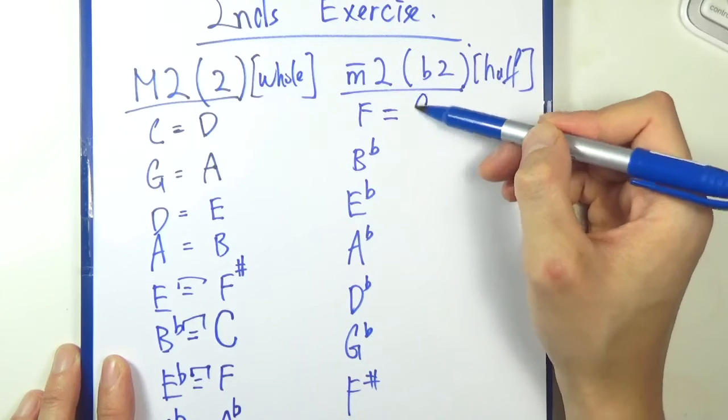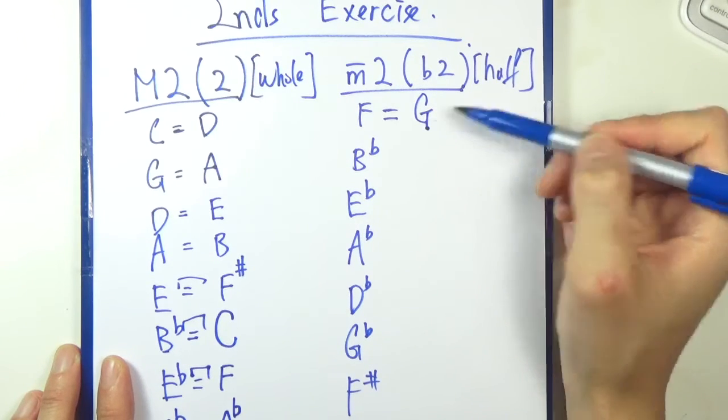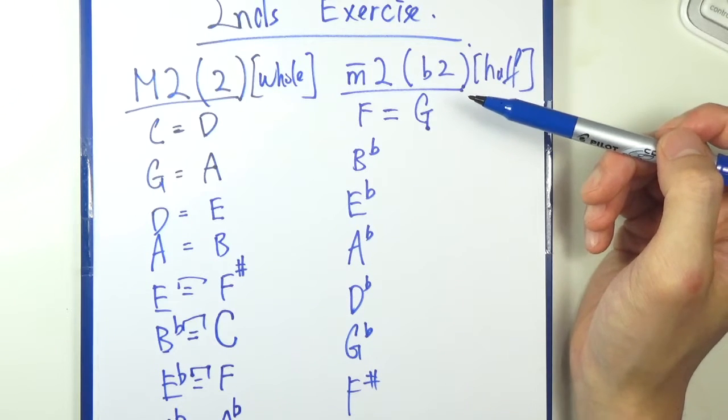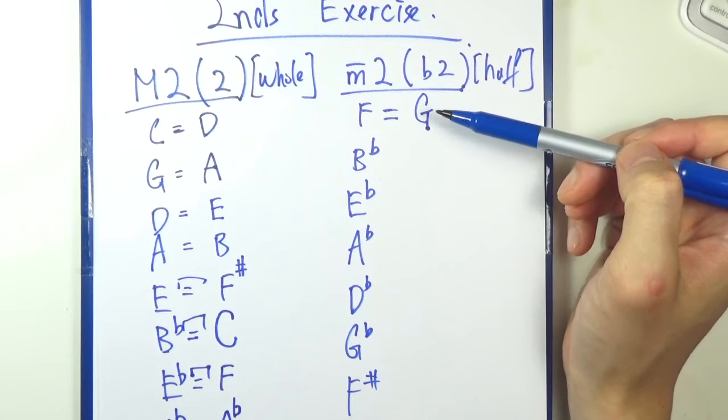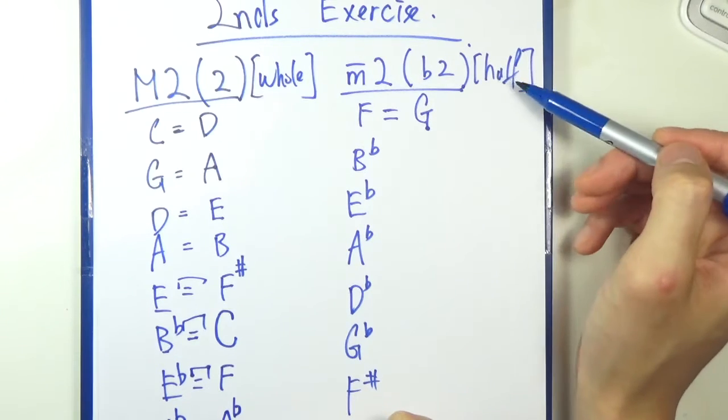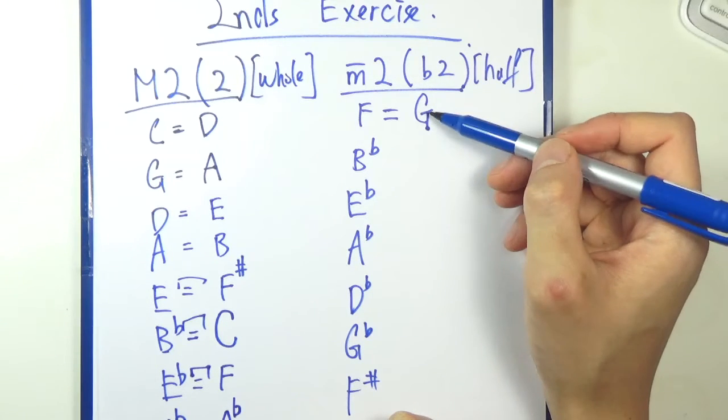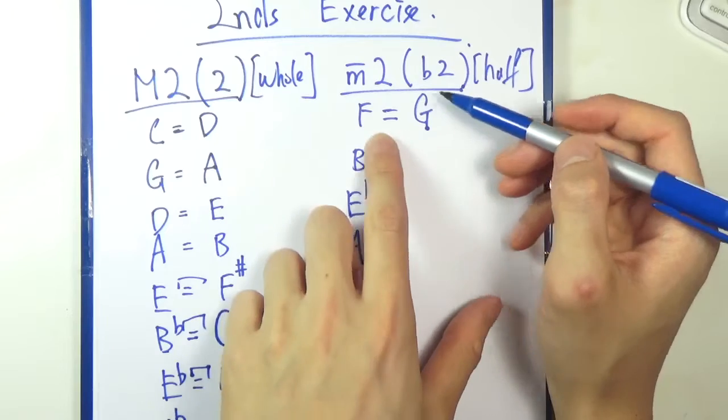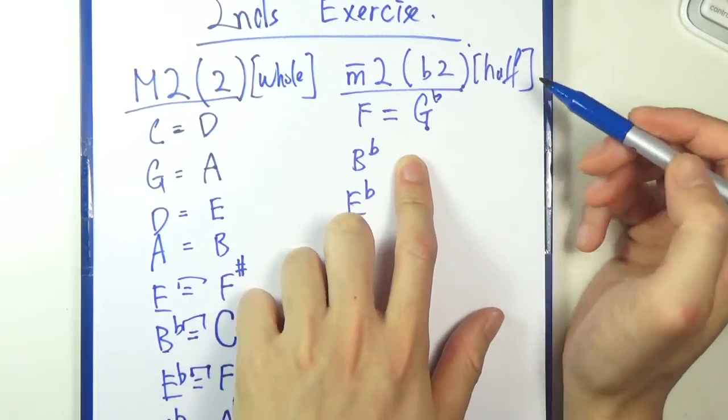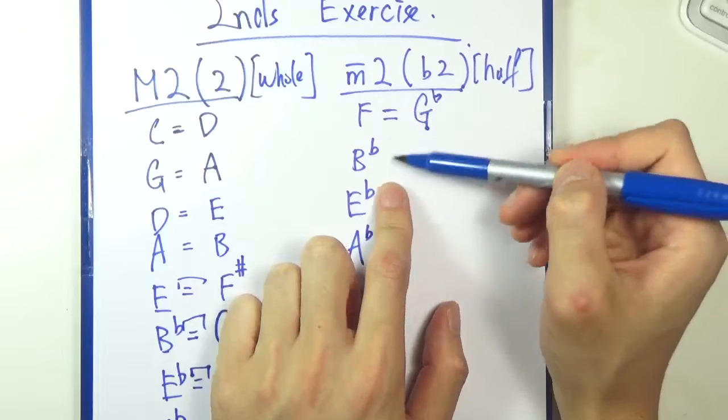So we might be seeing a lot of flats. So F, G. Regardless of what type of interval I'm trying to get, I would just go for quantity first. F and G, that has to be correct. But it would be some kind of G. So half step, G is probably too big. The distance is probably too big, so I put down flat here to make it smaller, making it a half step between these two notes.